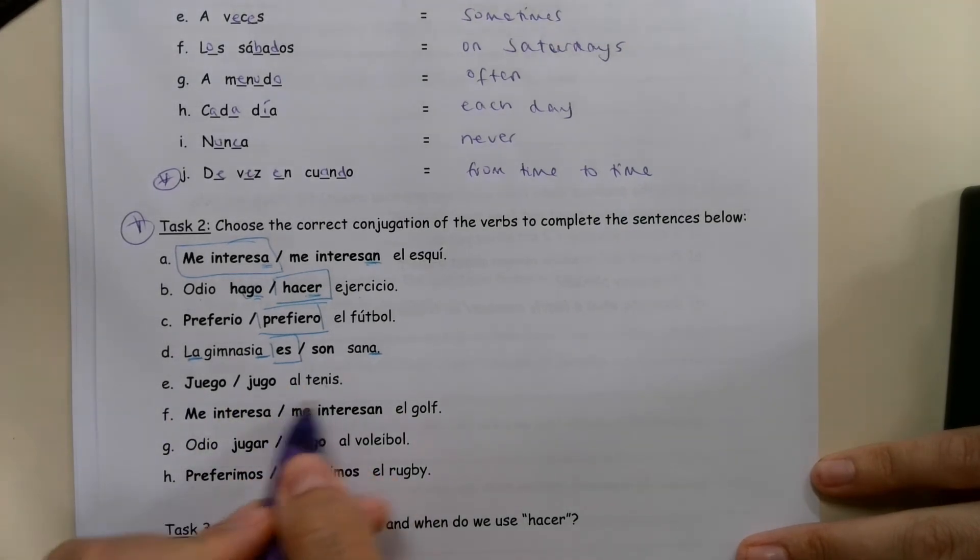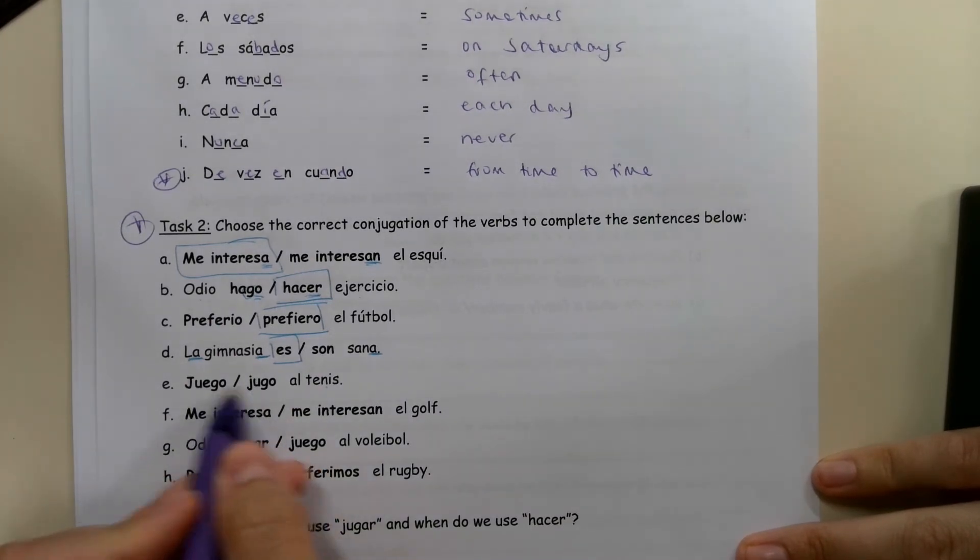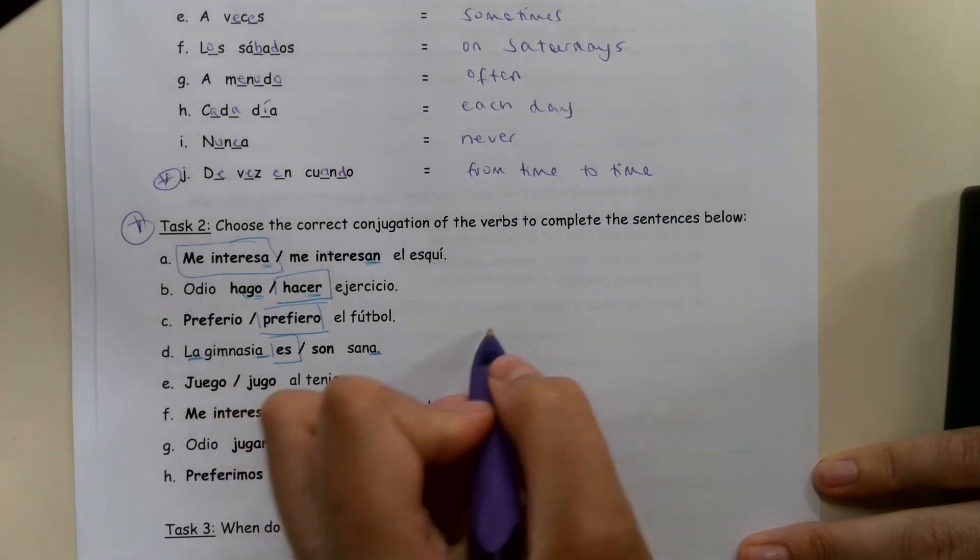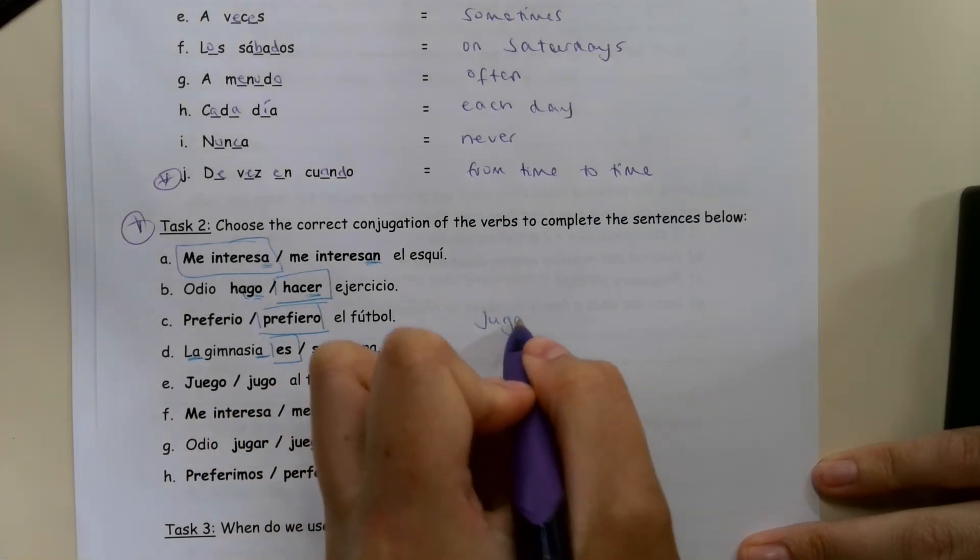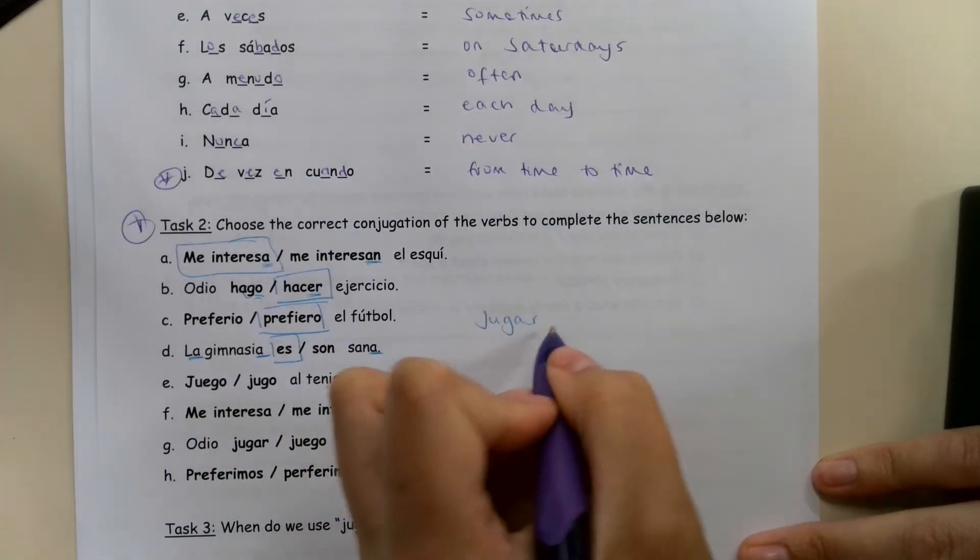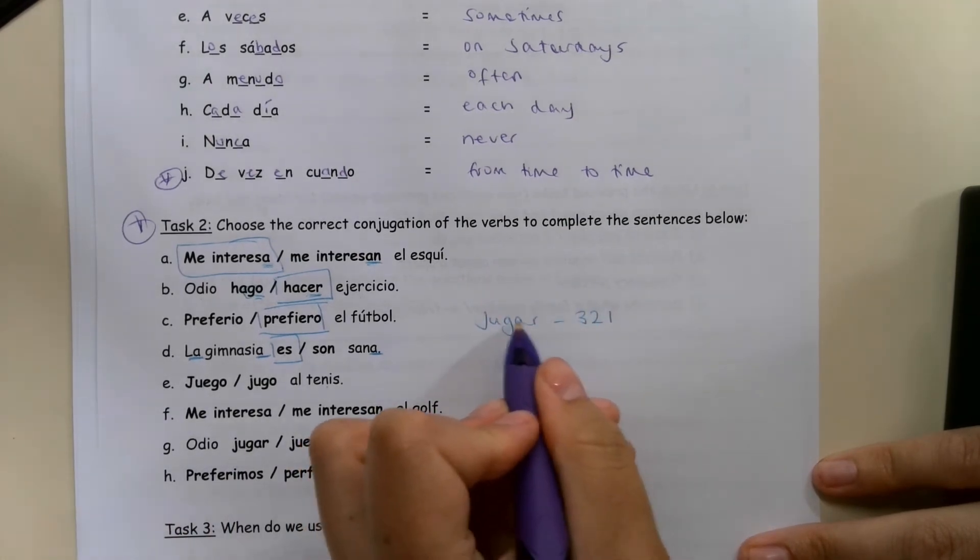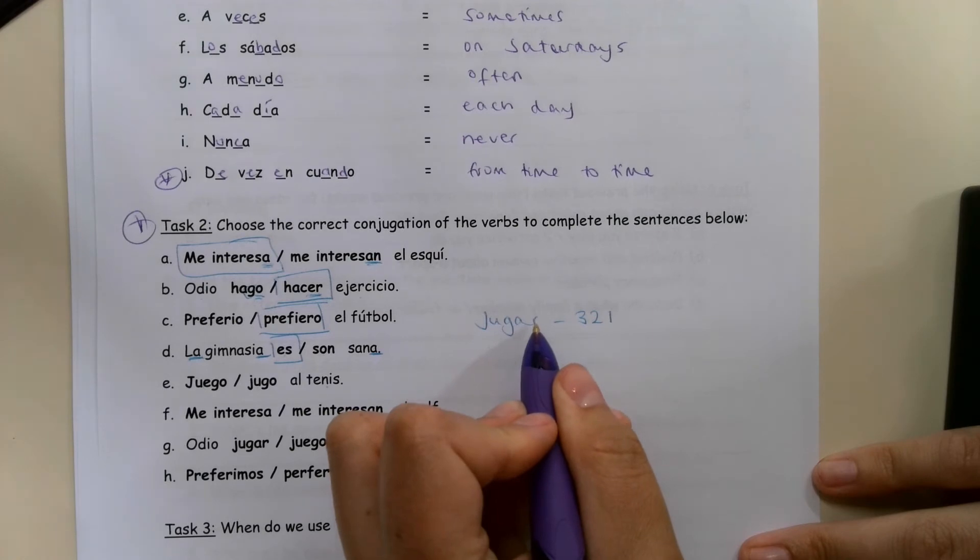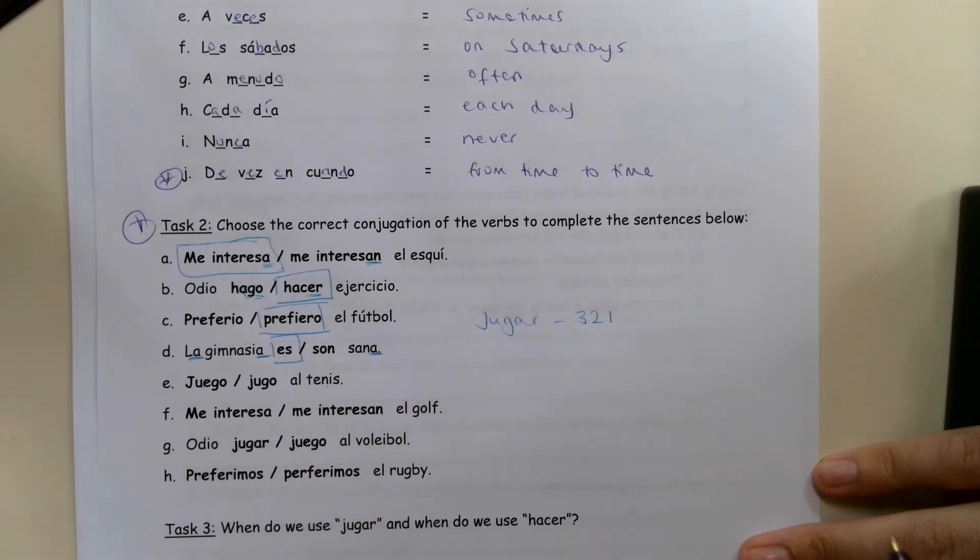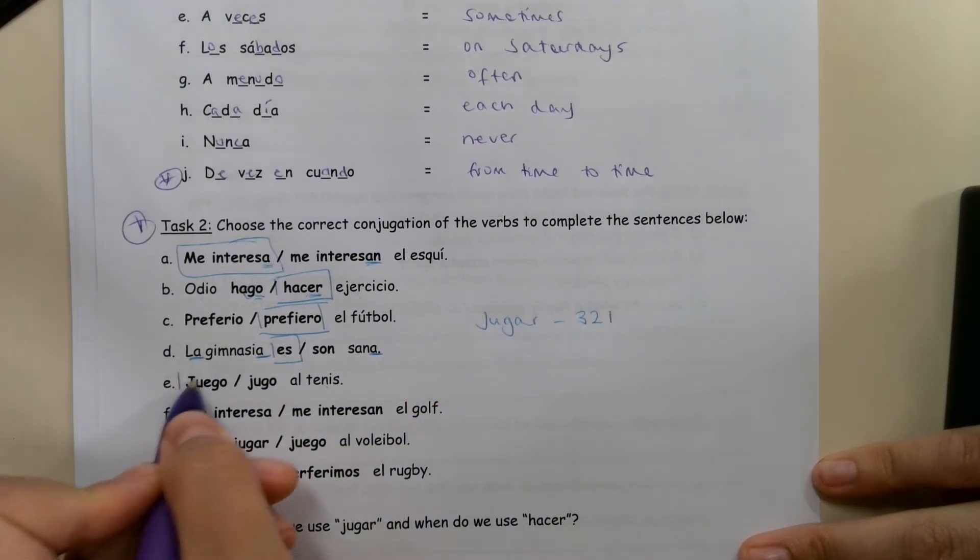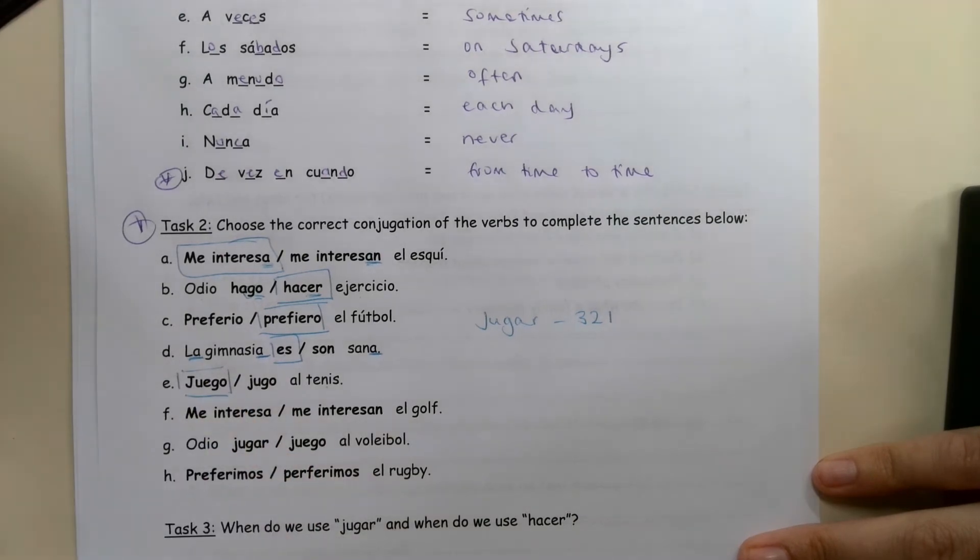So we know we're talking about playing tennis. This is a spelling issue. We need to remember that the verb jugar is to play, but it's a three, two, one verb. So normally we'd take off that AR and put our endings on. But with a three, two, one verb, we have some spelling changes. So for I play tennis, juego is I play. Jugo is not I play.